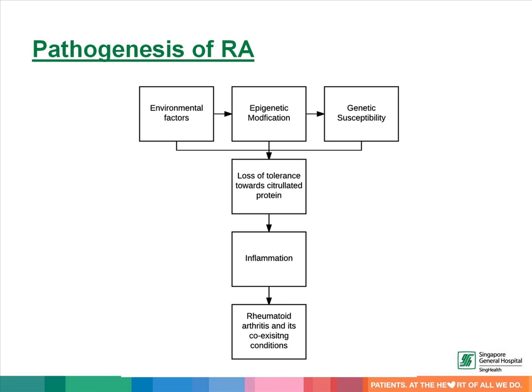This simplified schematic presentation demonstrates the interaction between environmental factors and genetics in the pathogenesis of rheumatoid arthritis. There is loss of tolerance towards the citrullinated proteins. When inflammation of the joints or synovitis is initiated and perpetuated, it leads to rheumatoid arthritis. The chronic inflammation also drives other coexisting diseases like cardiovascular disorders, osteoporosis, metabolic syndrome, and certain cancers.